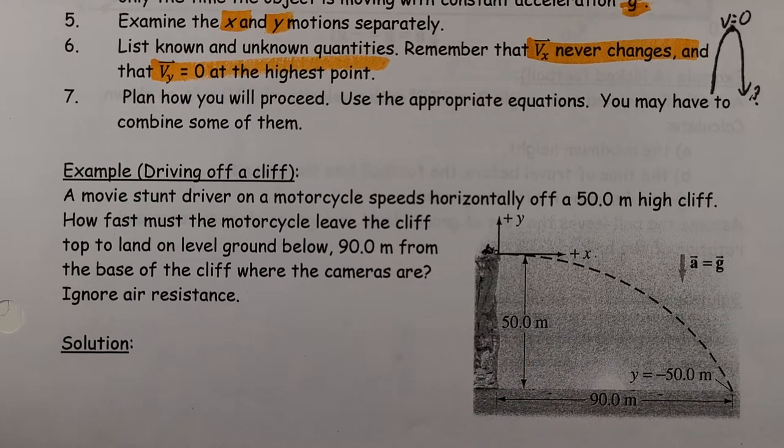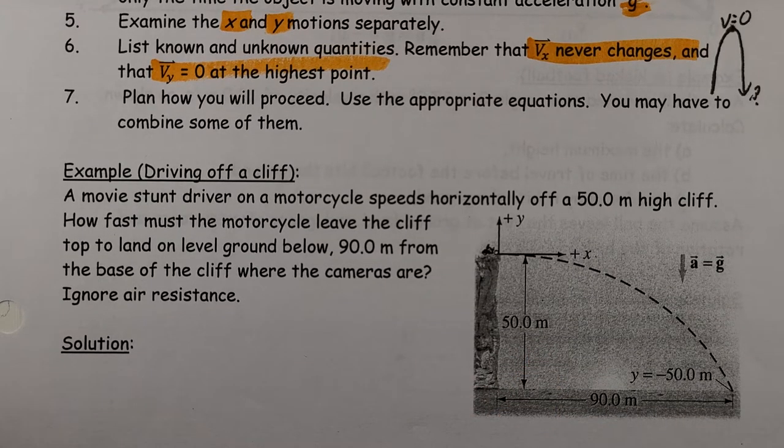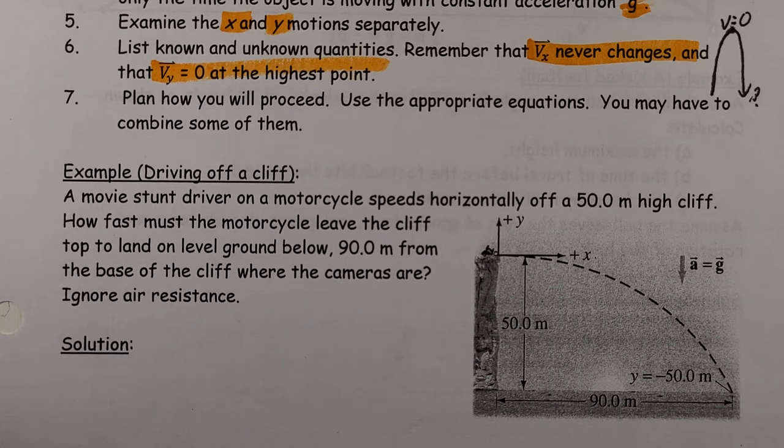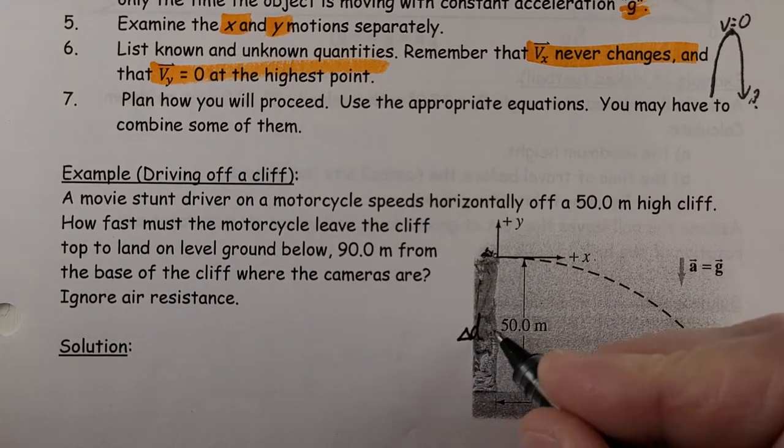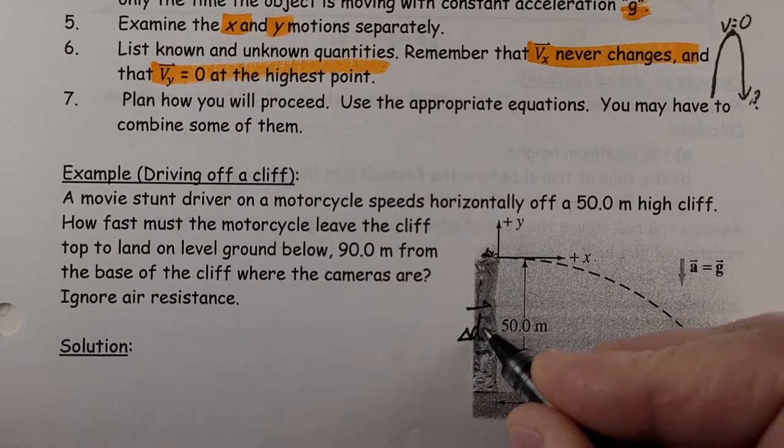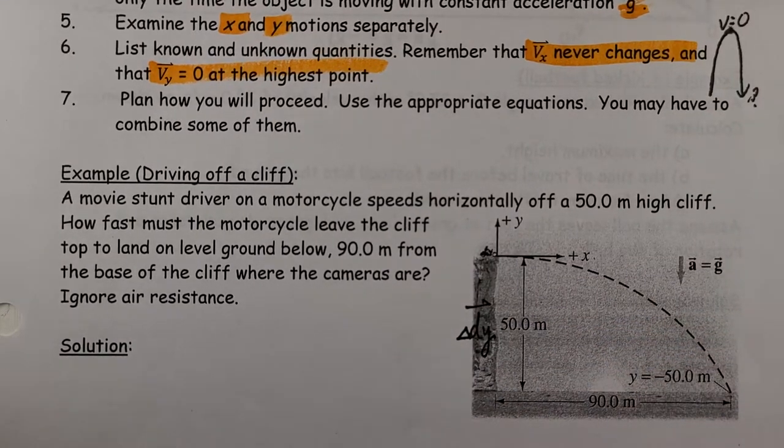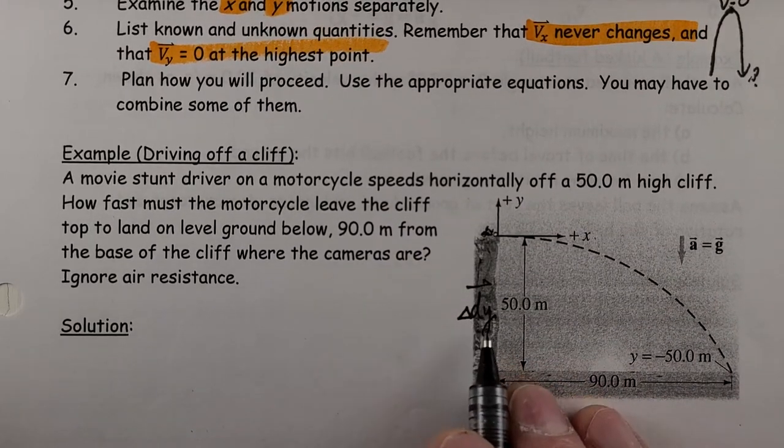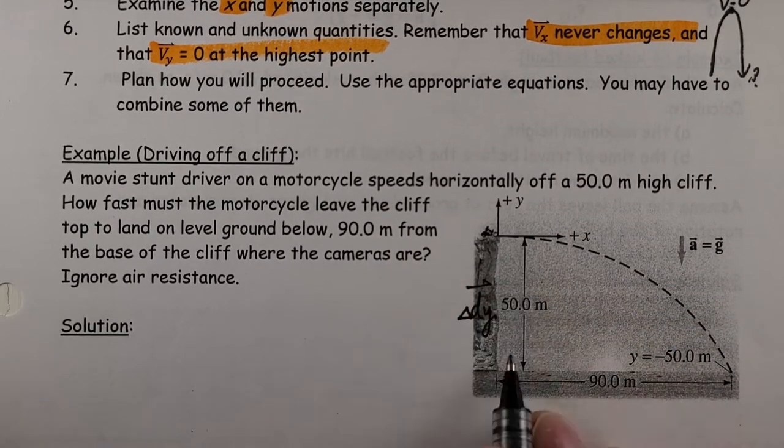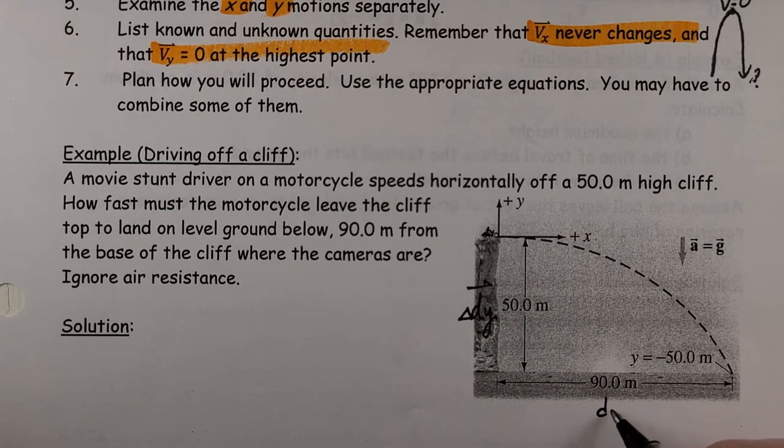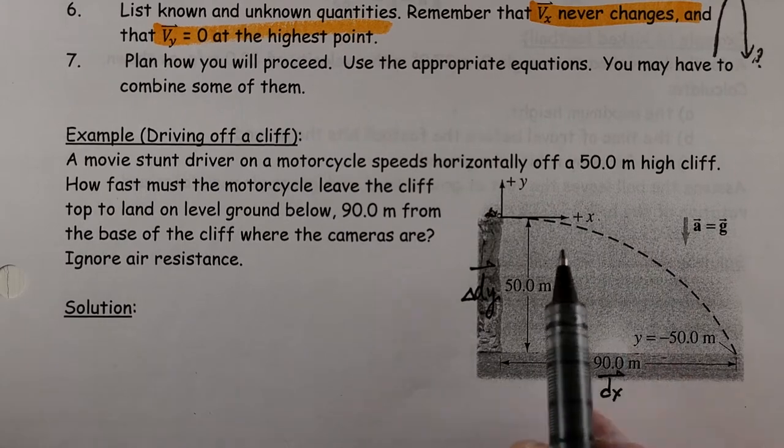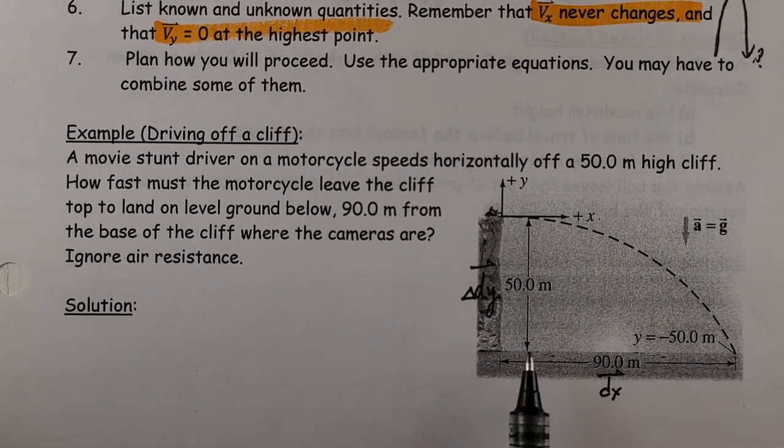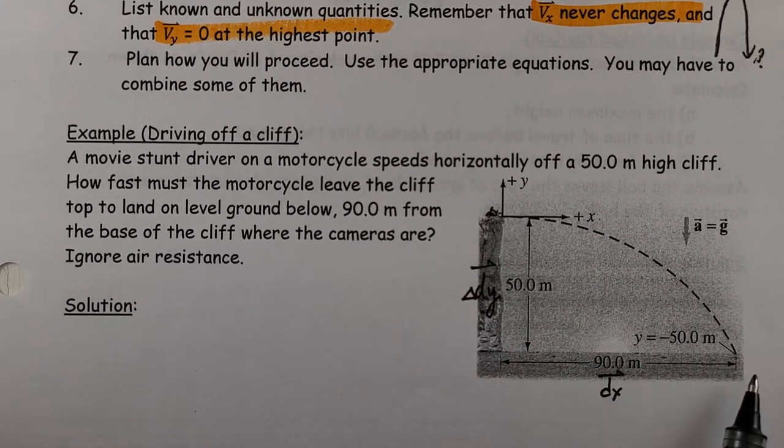Let's look at this scenario where I'm launching something horizontally. A movie stunt driver on a motorcycle speeds off a 50 meter high cliff. I'm going to call this dy—the displacement in the y direction. And we have dx, the displacement in the x direction. So he lands 90 meters away.